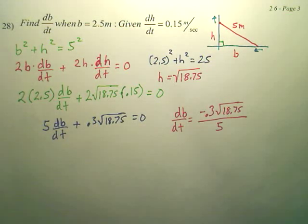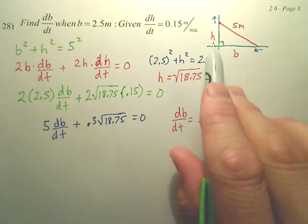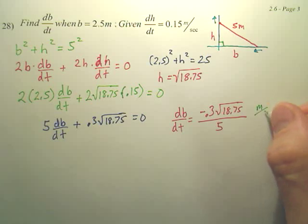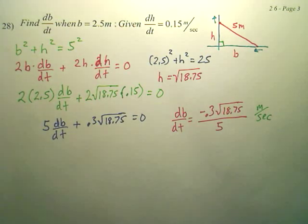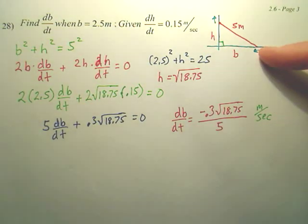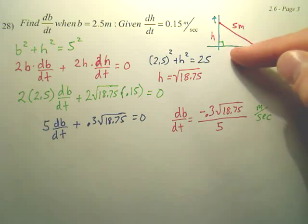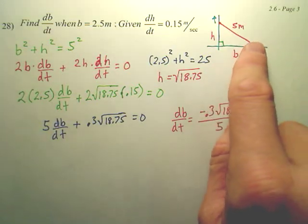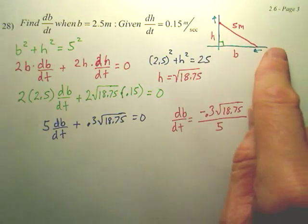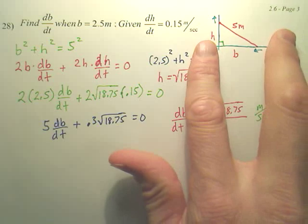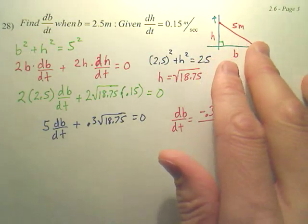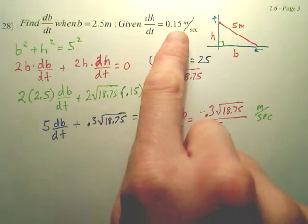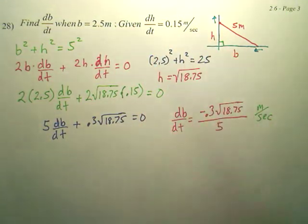And what units would that be? Well, if this is moving in meters per second, isn't this also? Aren't they both moving in meters per second? Now why is it negative? Because if you think of a number line, is this way negative and this way positive? Going towards, think of a number line. This one's going up, this one's decreasing. Isn't your rate going towards a negative direction? That's kind of why it's negative.